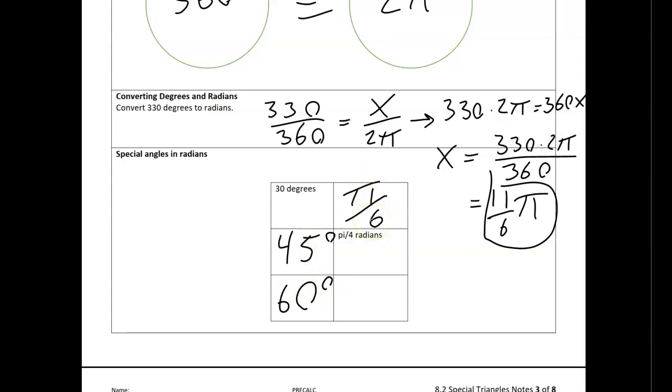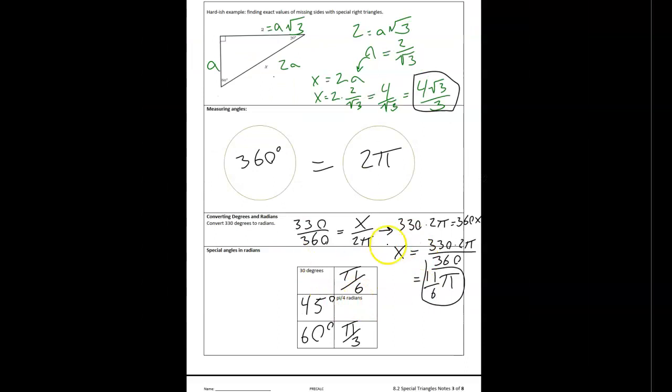We just use a proportion. And what that means is when I take my three special angles, I can convert those values. So by the same math, pi over 6 radians and pi over 3 radians. So again, just relationships that we're using to build towards that unit circle.